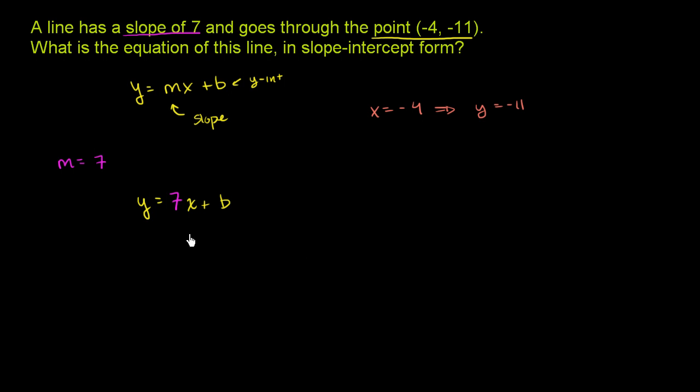So we can use this information in the part of our equation that we've been able to figure out so far. We know that when x equals negative 4, y is going to equal negative 11. So what b do we need to make that happen? Let's try it out.